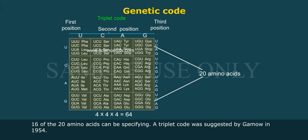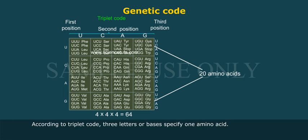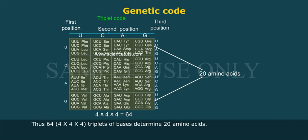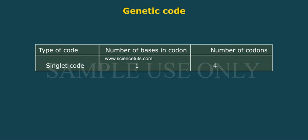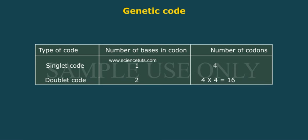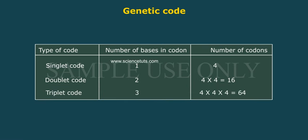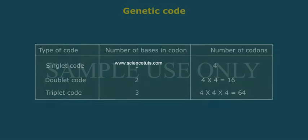A triplet code was suggested by Gamow in 1954. According to the triplet code, three letters or bases specify one amino acid. Thus, 64 (4×4×4) triplets of bases determine 20 amino acids. The table summarizes: singlet code has 4 codons, doublet code has 16 codons, and triplet code has 64 codons.